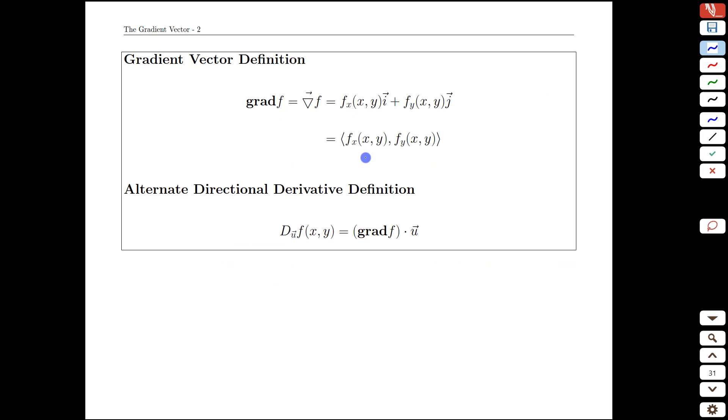Here that is written out and this is probably the form that is most commonly used. The key thing is to note that there's a comma in the middle, we're not adding, we're not multiplying, we're taking a package, the x derivative at the point we're interested in, comma, the y derivative of the point we're interested in.